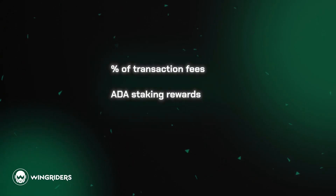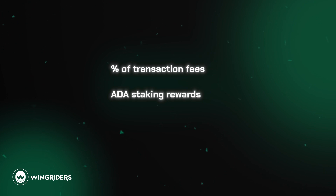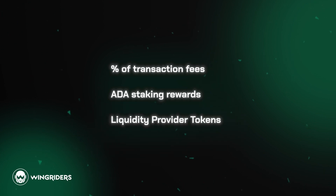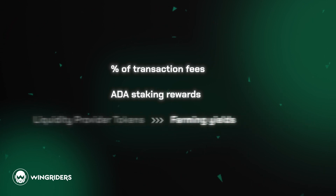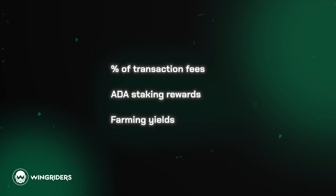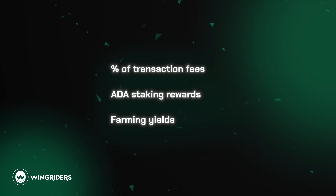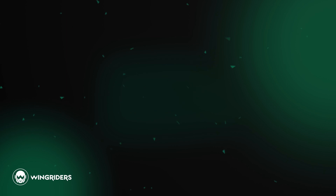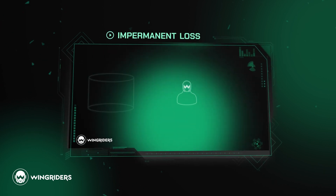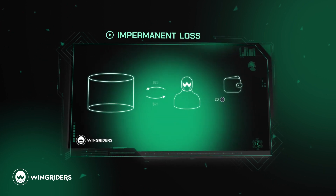Fees and staking rewards for providing liquidity are just the start. By providing liquidity, you receive liquidity provider tokens, which you can deposit into a particular farm to gain further farming yields. All these gains are there to balance out your potential impermanent loss. You can find out more about impermanent loss in our separate video.